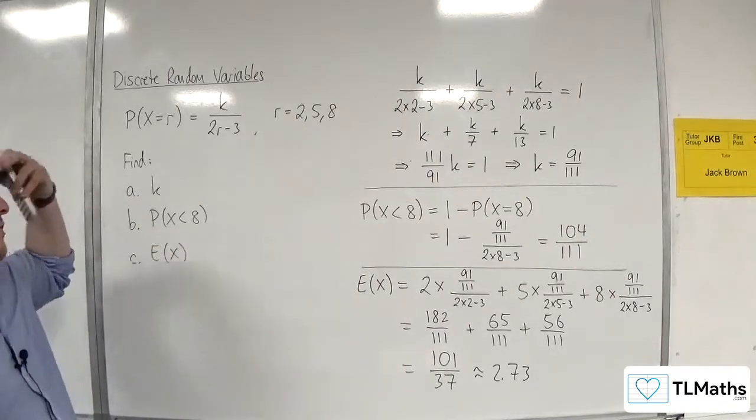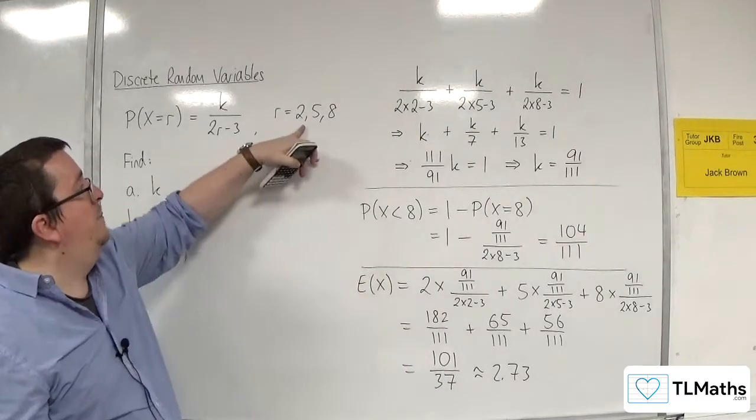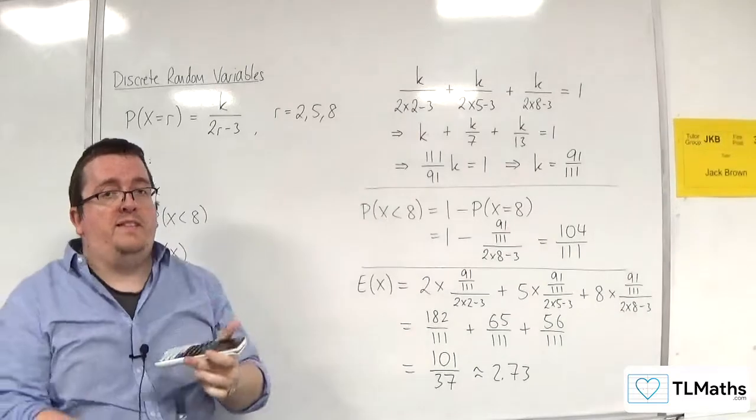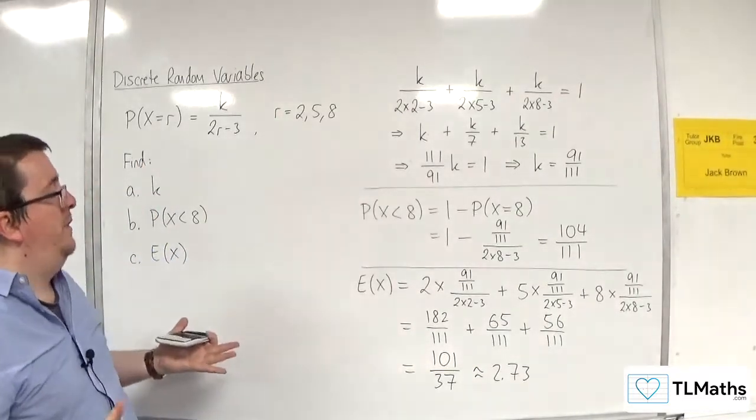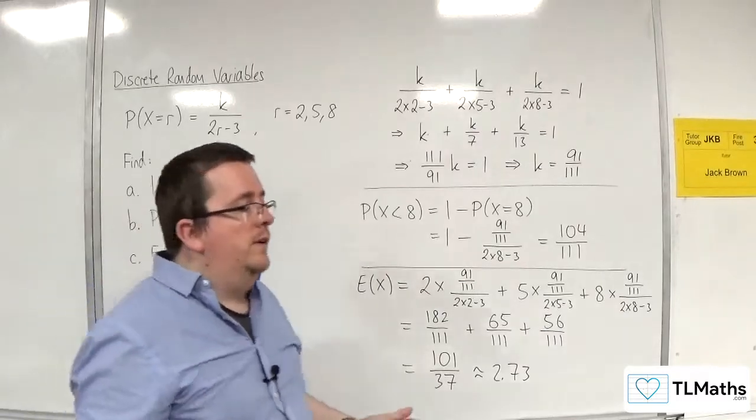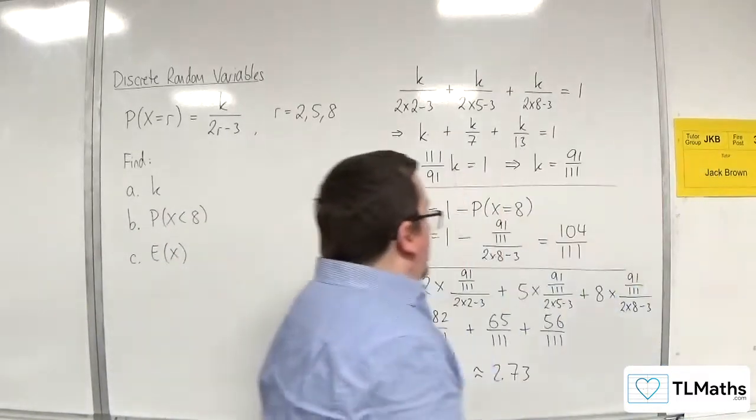I would want to make sure that I've got the exact value there. The 2.73 is just so I can judge that I'm getting something reasonably right. So it's got to be somewhere between 2 and 8. If you were getting something outside of 2 to 8, then you know you've gone wrong. It wouldn't make any sense for that to be the case.